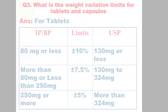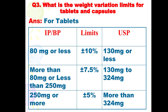Next is: what is the weight variation limits for tablets and capsules? For tablets, as per IP and BP: 80 mg or less, plus minus 10%; more than 80 mg or less than 250 mg, plus minus 7.5%; 250 mg or more, plus minus 5%. As per USP: 130 mg or less, plus minus 10%; 130 mg to 324 mg, plus minus 7.5%; and more than 324 mg, plus minus 5%.